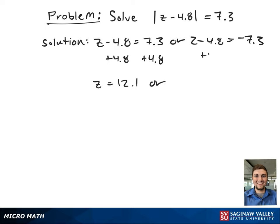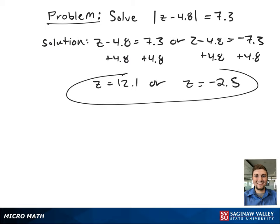Moving to the right-hand side of the equation, adding 4.8 to both sides will result in z equals negative 2.5. And that is our final answer.